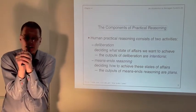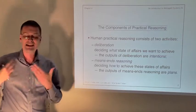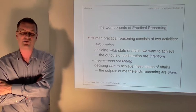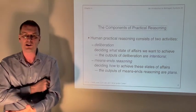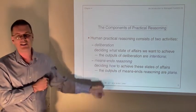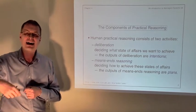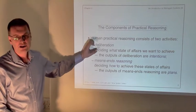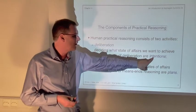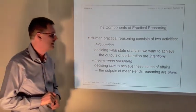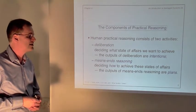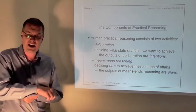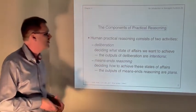Once you've fixed upon those things and decided what you're going to try to achieve, you're faced with a problem: how do you actually achieve them? This process of figuring out how to achieve them is called means-ends reasoning. The means are the actions at your disposal; the ends are the things you want to accomplish. The outputs of deliberation are intentions — things you want to accomplish, very often called goals. The outputs of means-ends reasoning are plans, essentially sequences of actions that accomplish your intention.